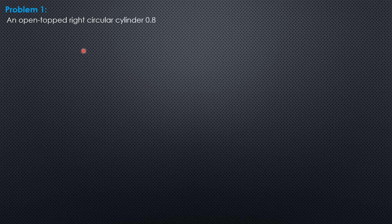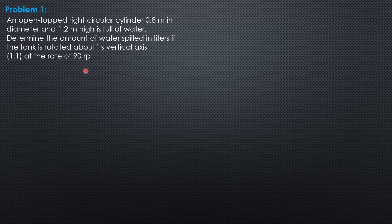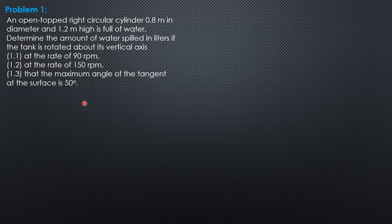So this is the problem. An open top right circular cylinder, 0.8 meter in diameter and 1.2 meters high, is full of water. Determine the amount of water spilled in liters if the tank is rotated about its vertical axis, first at the rate of 90 revolutions per minute, second at the rate of 150 revolutions per minute, and third that the maximum angle of the tangent at the surface is 50 degrees.